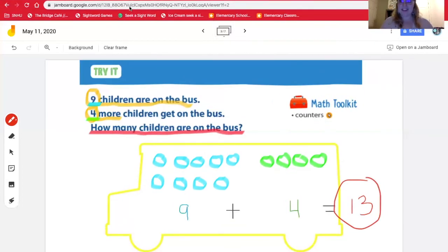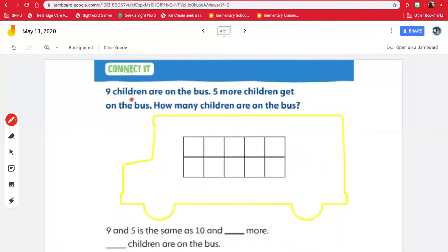Let's try the next problem with the 10 frame. It says nine children on the bus, but instead of four more getting on, we have five more children get on the bus. How many children are on the bus? So we know we have nine. So I'm going to circle that in blue. And we have five more get on the bus. And the question is asking, how many children are on the bus?